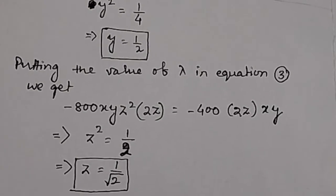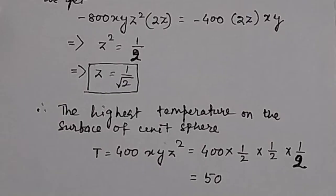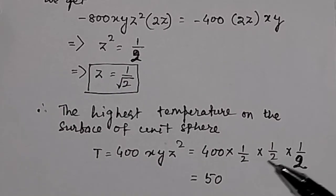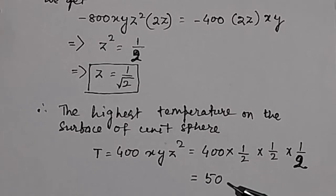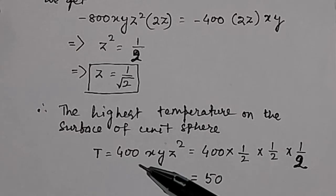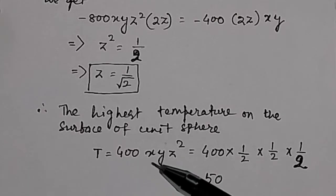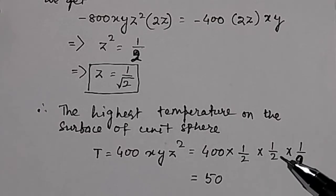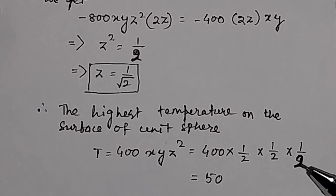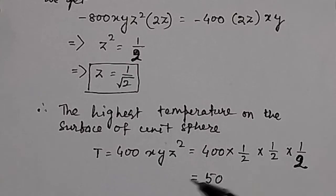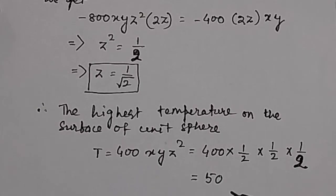Now substituting the values x = 1/2, y = 1/2, and z = 1/√2 into the objective function T = 400xyz²: z² = (1/√2)² = 1/2. So T = 400 × (1/2) × (1/2) × (1/2) = 50. The temperature is 50.